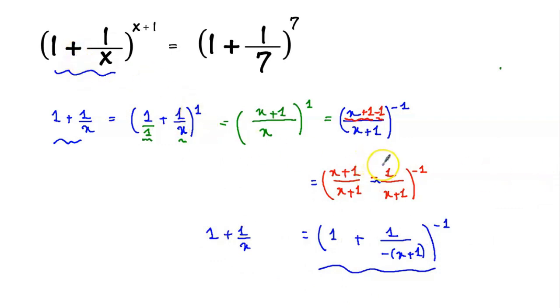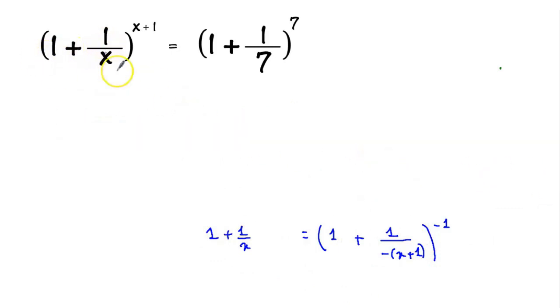So let's see what we will get. So 1 plus 1 over x equal to 1 plus 1 over minus x plus 1 to power minus 1 to power x plus 1 equal to 1 plus 1 over 7 to power 7.